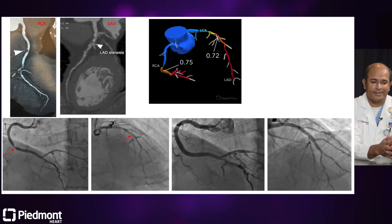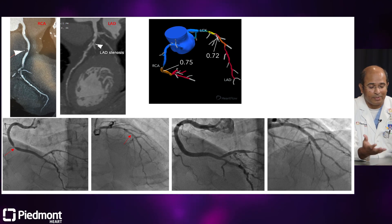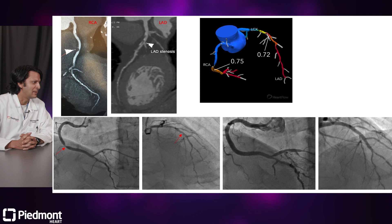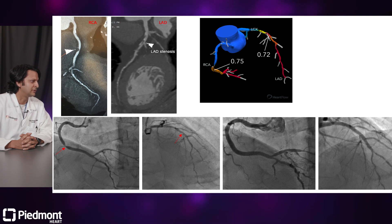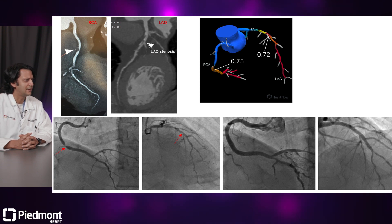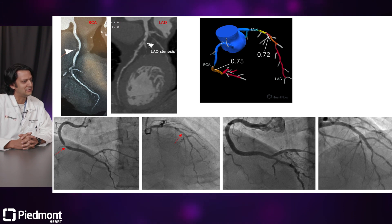Here is a case that Dr. Rangarajan will discuss from Piedmont, where we have done about 150 of these cases. On the upper left you've got the CT images — the far upper left shows the RCA with a very significant, severe lesion in the mid-RCA. Immediately next to that, the LAD is shown with a lesion that's perhaps intermediate, probably 50 to 70%, and we'd like to know if that lesion is significant enough to require intervention. To the right of that is the CT-FFR performed on this patient's CT.